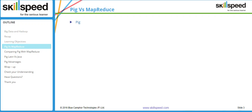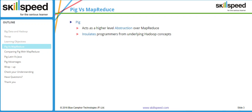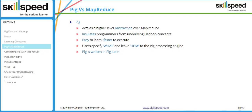Pig acts like a higher level abstraction over MapReduce and it insulates programmers from the underlying Hadoop concepts. If you learn Pig, you need not worry about the nitty-gritties of how Hadoop functions or the basics of MapReduce. You can learn the Pig syntax and start working with your Hadoop cluster from day one. The user specifies what to do and leaves how to the Pig processing engine. Pig Latin scripts are compiled and converted into a series of MapReduce jobs to achieve the desired result.